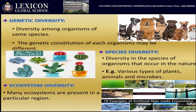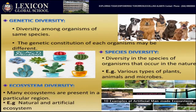The third level is ecosystem diversity — many ecosystems present in a particular region. As seen in the picture, the above shows natural ecosystems while the below shows man-made or artificial ecosystems: dams creating different ecosystems, buildings forming a different ecosystem. These are the three different biodiversities observed in our environment.